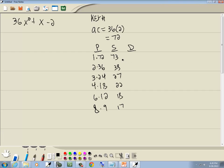Difference column, we want to subtract smaller from larger. 72 minus 1 is 71, 36 minus 2 is 34, 24 minus 3 is 21, 18 minus 4 is 14, 12 minus 6 is 6, 9 minus 8 is 1.